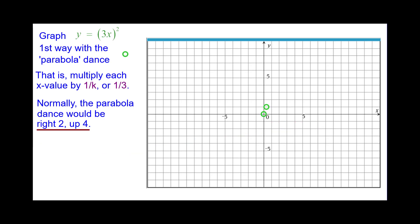The next point would be right 2 up 4. But for this one, it will be right 2 thirds up 4 because 1 third times 2 is 2 thirds. The y-coordinate stays the same.